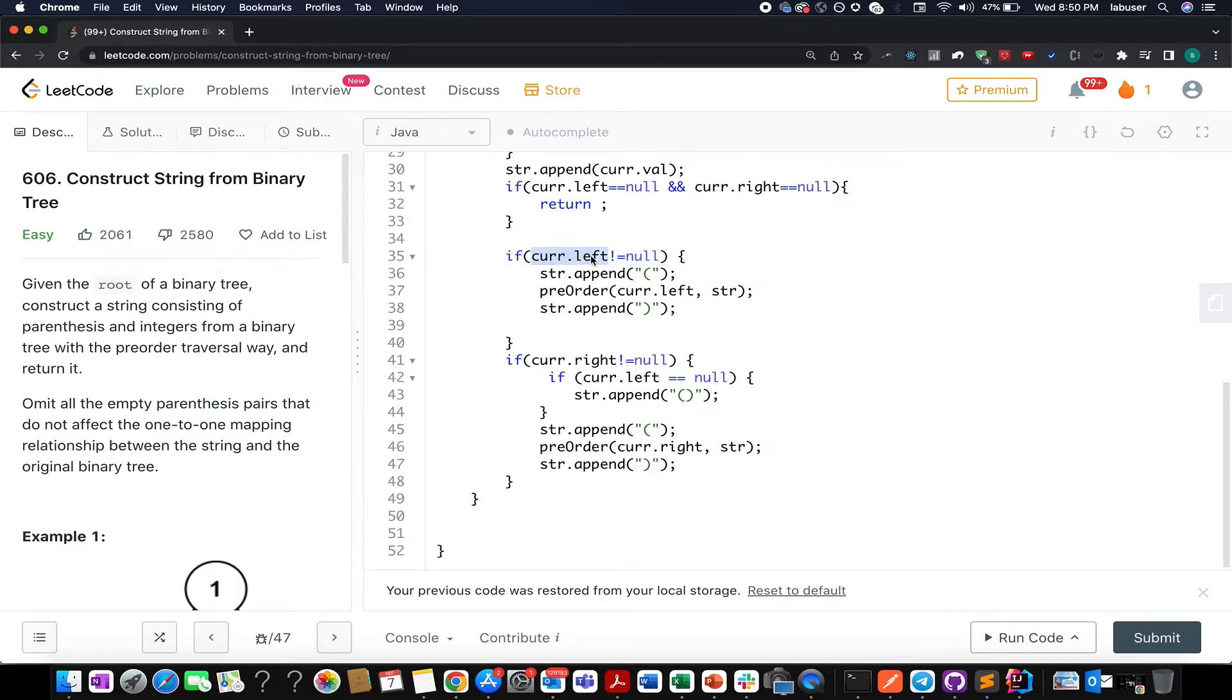At line number 35, what do I do? I check if my current.left has any non-null value - that means it has the left side. If it has a left side, I simply create an opening bracket, append it to my str string, I move in a pre-order fashion and I pass in current.left comma str. Once I am done with this, I append a closing bracket afterwards. And I do a similar kind of thing for my right child as well.